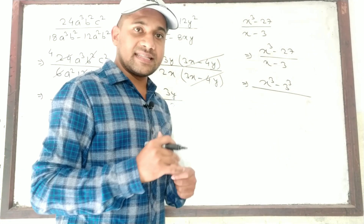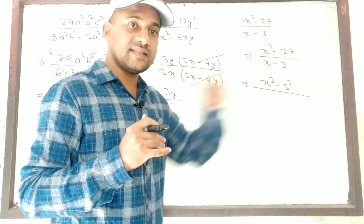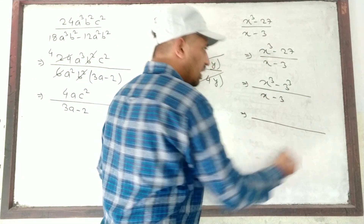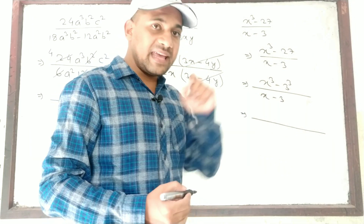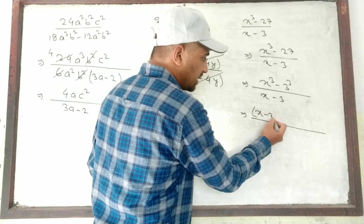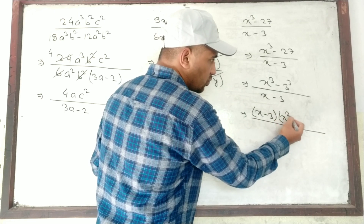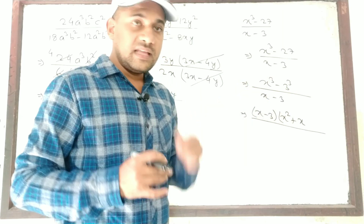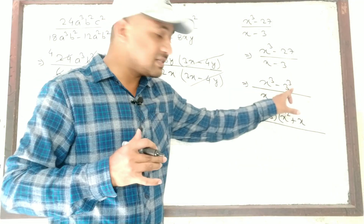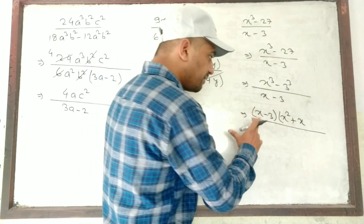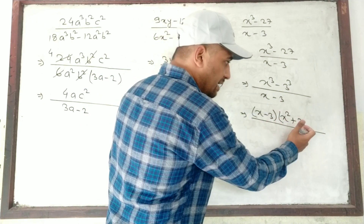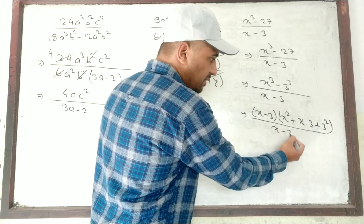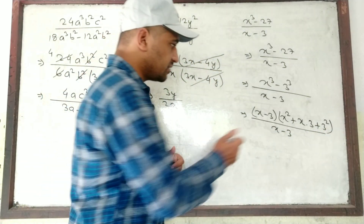Apply the formula: X³ minus 27 becomes X³ minus 3³. The formula for A³ minus B³ is (A minus B)(A² plus AB plus B²). Here A = X and B = 3. So the numerator becomes (X minus 3)(X² plus X·3 plus 3²), and the denominator is (X minus 3).